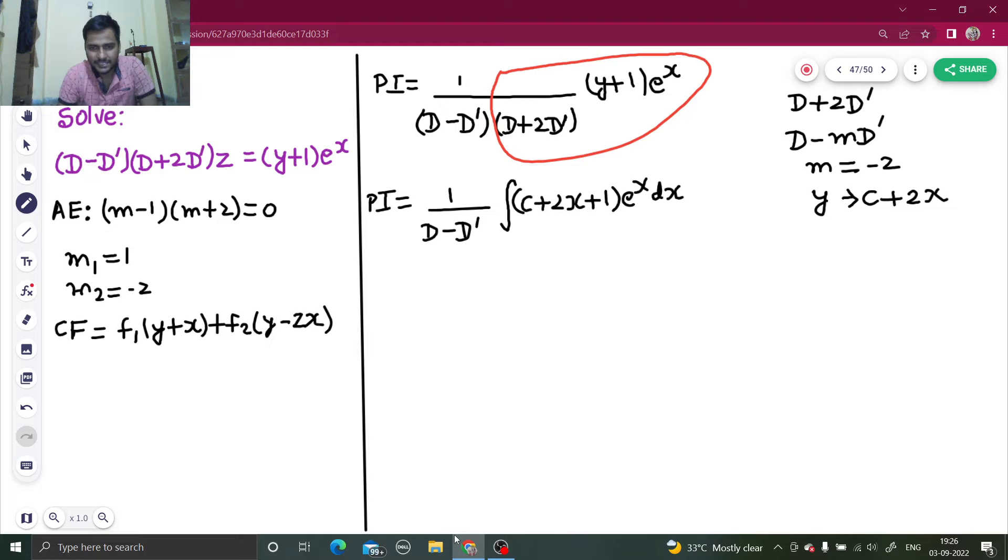Now, use integration by parts. I am doing the integration separately. If I take this as the first function, this as the second function, first function as it is, integration of e^x is e^x minus integration of derivative of first function. Your derivative of c and 1 is 0. Derivative of 2x is 2 into integration of e^x, whole integration. So you will get e^x common, c plus 2x plus 1 from here, and minus 2 e^x from here.